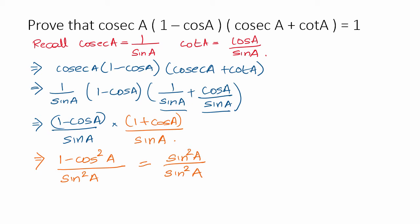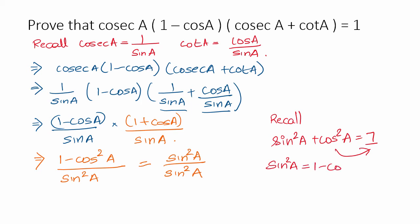Why did this happen? Because 1 minus cos² A can be recalled from the identity sin² A plus cos² A equals 1. If we rearrange, sin² A equals 1 minus cos² A. So 1 minus cos² A is the same as sin² A. Therefore the expression becomes sin² A divided by sin² A, which equals 1.